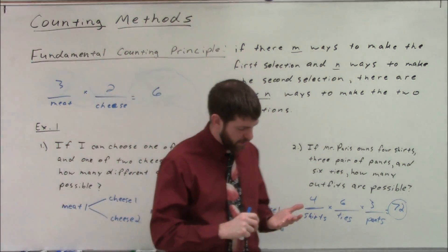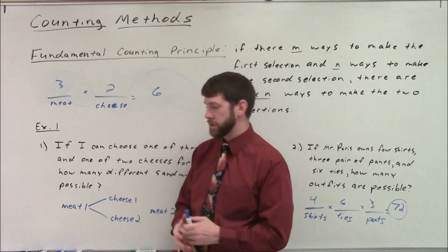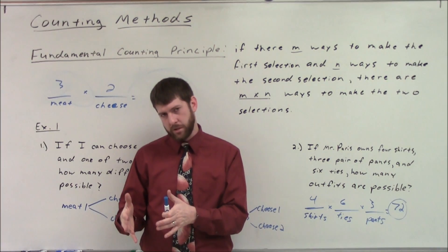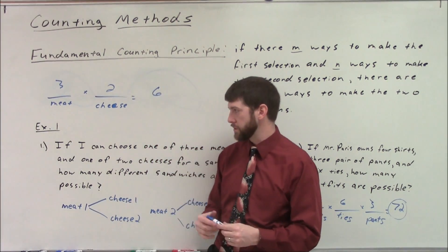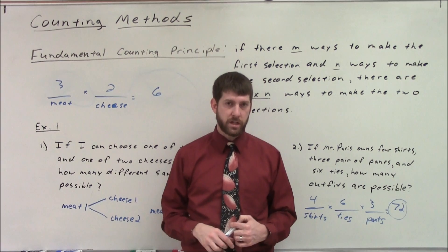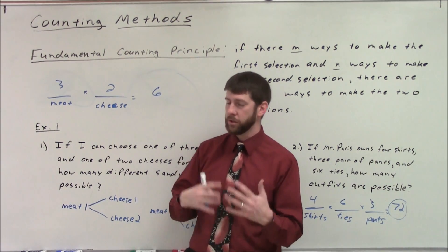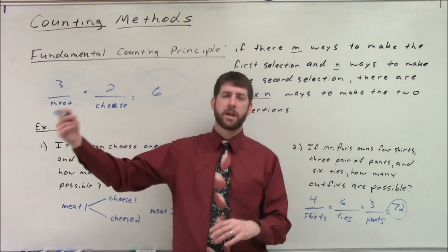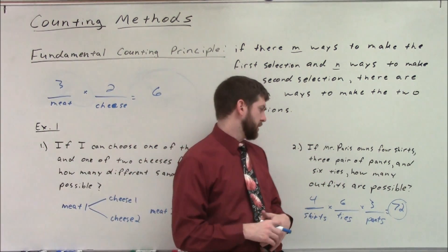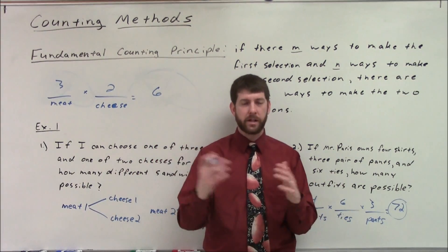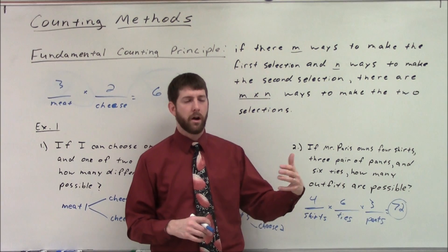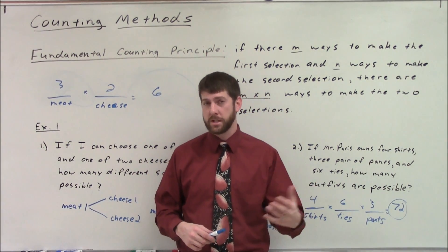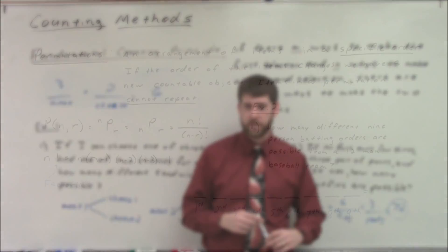That's the Fundamental Counting Principle — figure out how many possible objects you have in your first scenario, how many in the second, and multiply those together. Now, how we create each of those subsets gets more involved when we start putting restrictions on things — like once I pick one type of meat I can't use it again. That leads into permutations, which we're going to cover next.